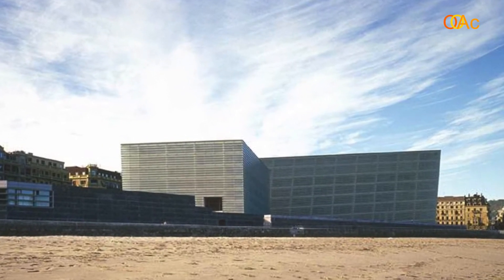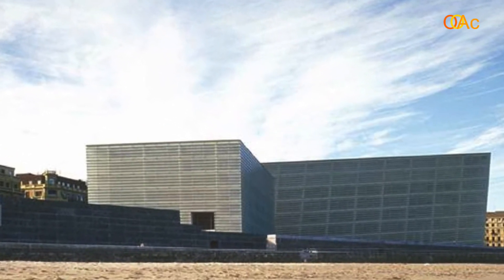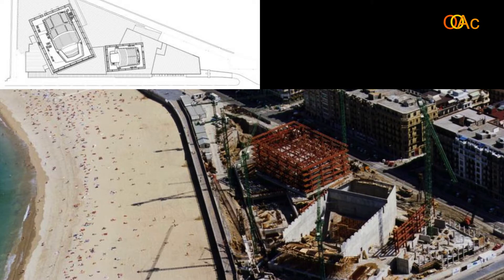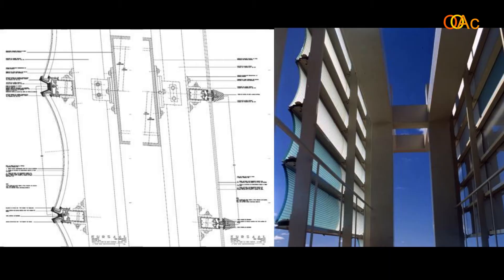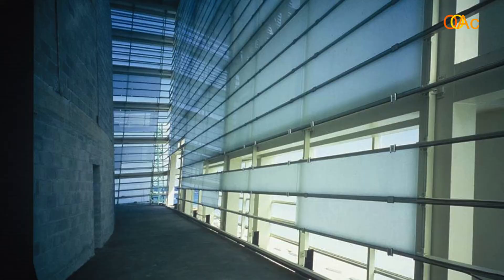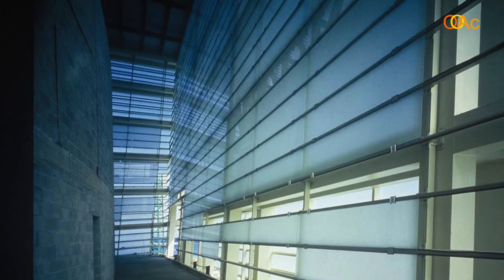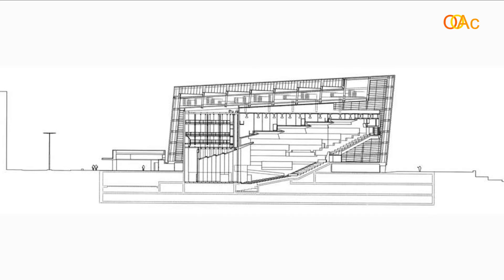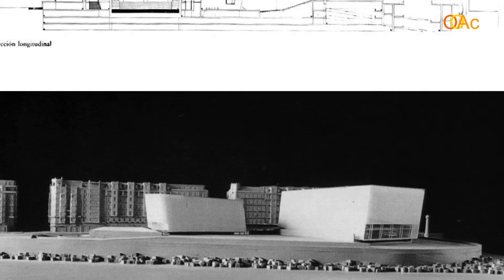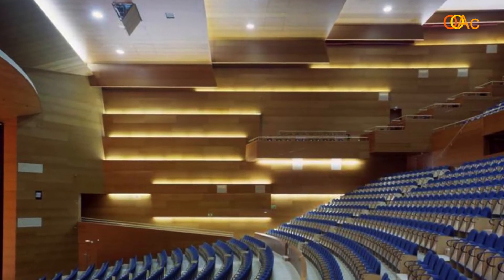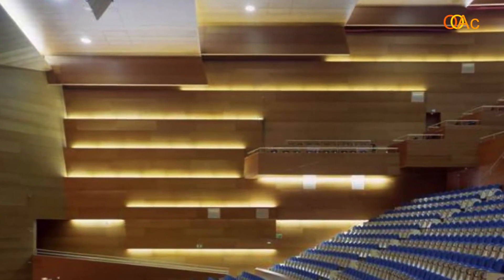Moneo designed the building with two auditoriums, a larger and a smaller one. The auditoriums are built with concrete shells in the interior and a glass facade on the exterior — two layers of skin. The first one, the glass, relates to the city, the beach, and the sunlight, absorbing and transforming the sunlight because of its curvilinear facade reflecting the ocean. The interior, made with a concrete shell, isolates from the sound of the city and provides a perfect environment and acoustics for a concert.